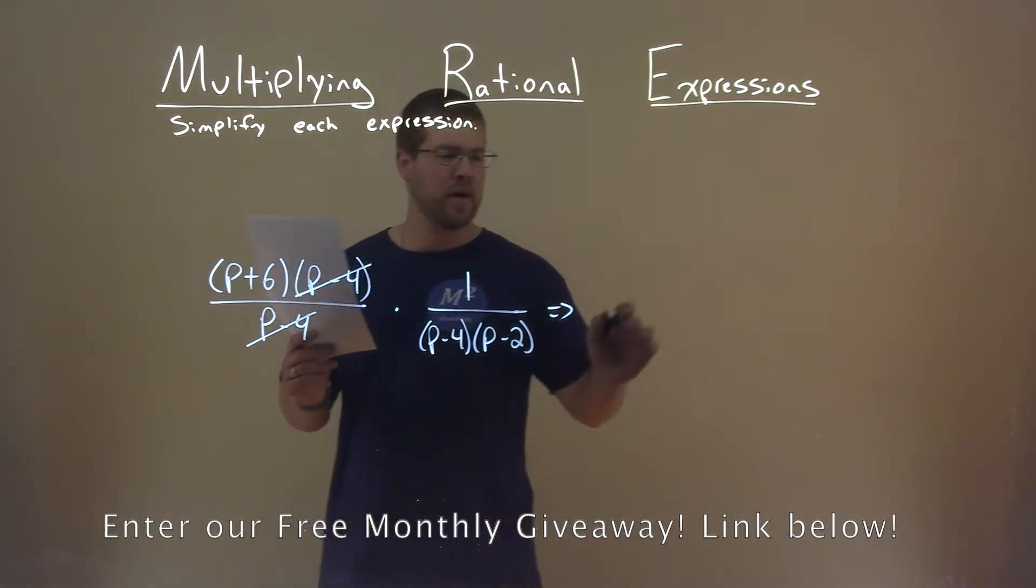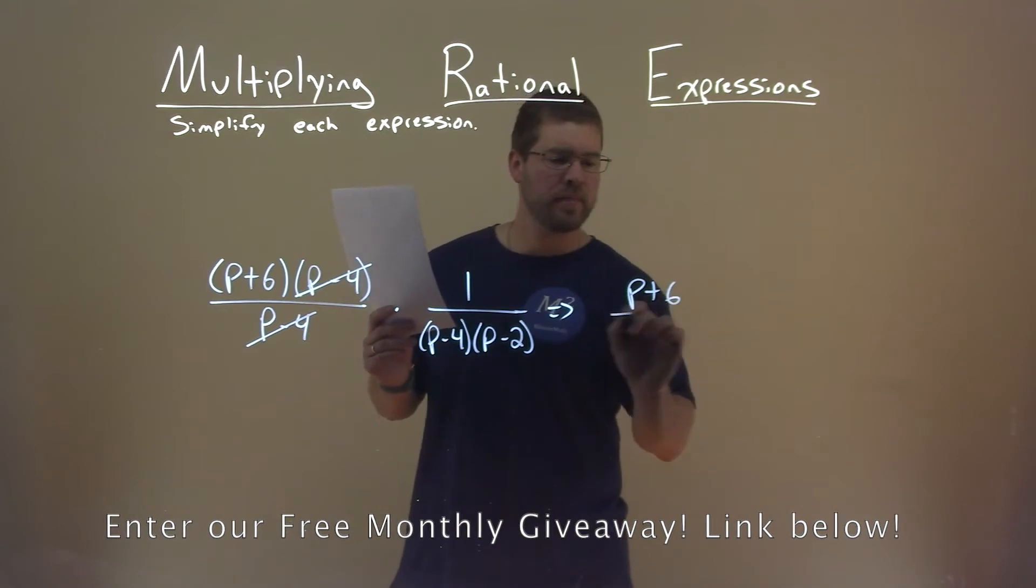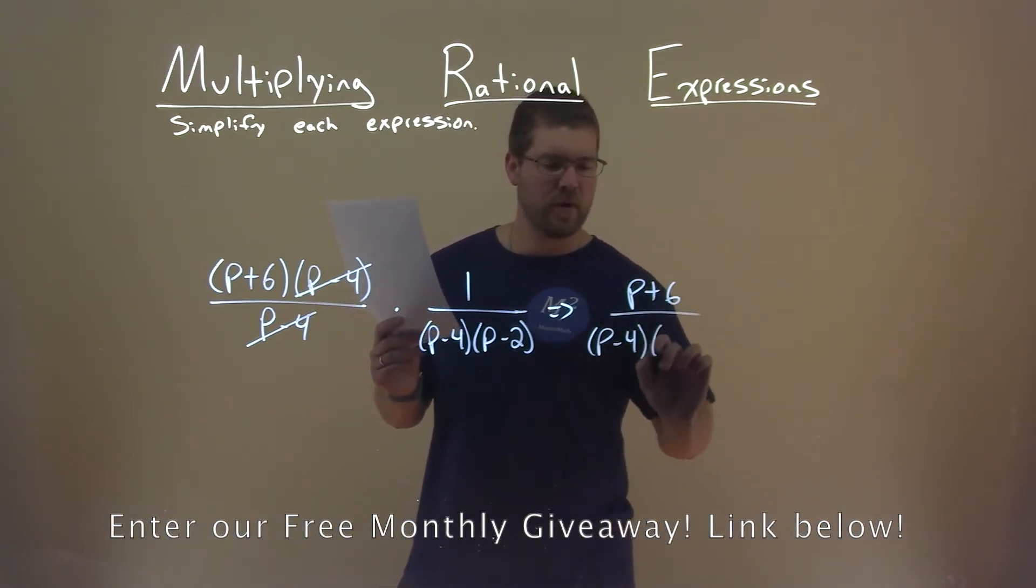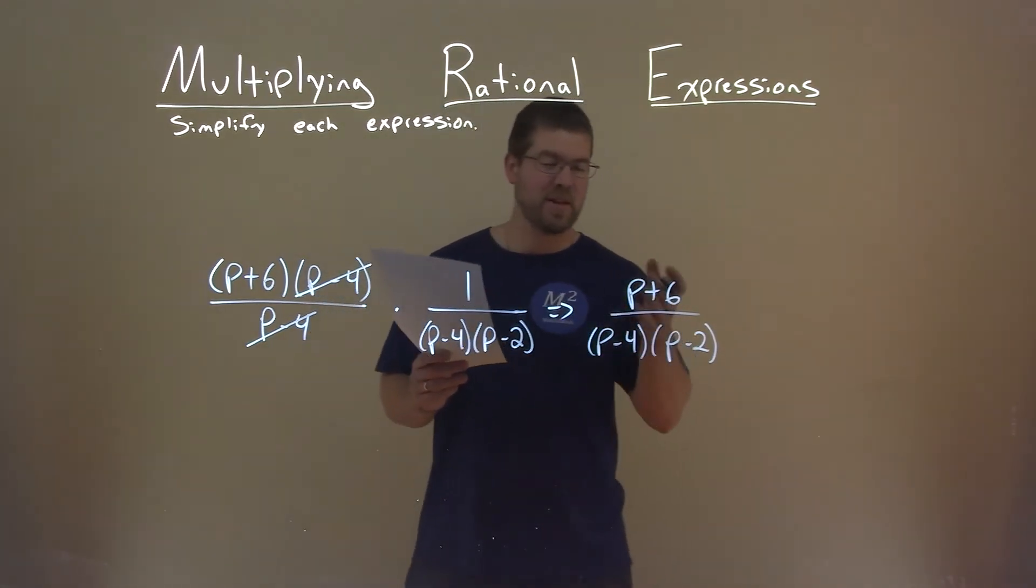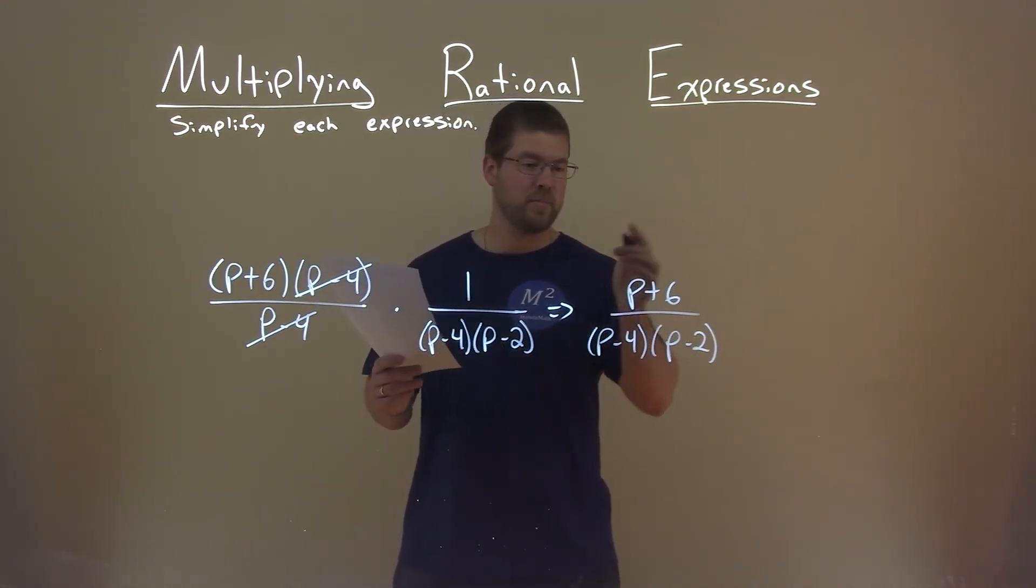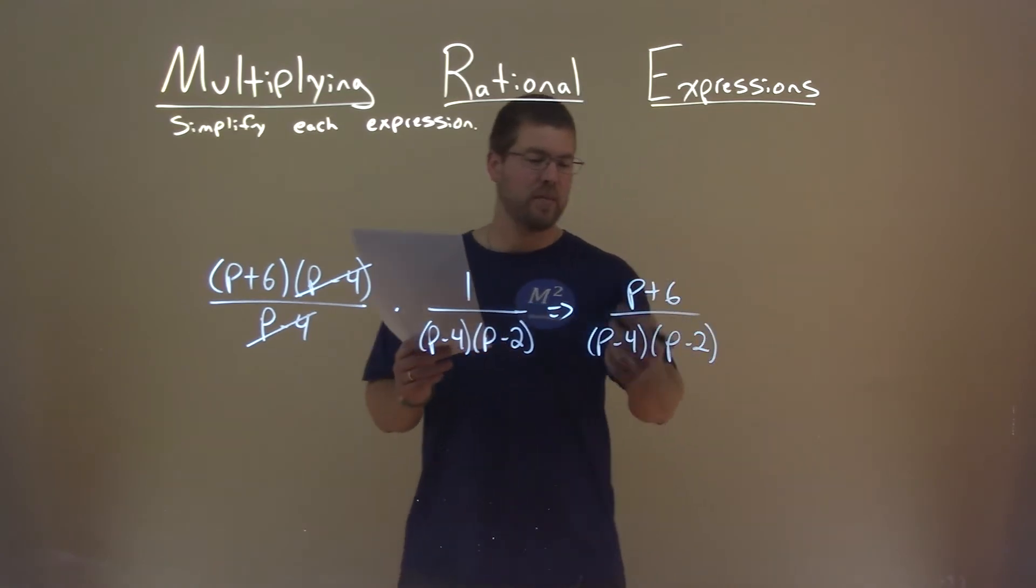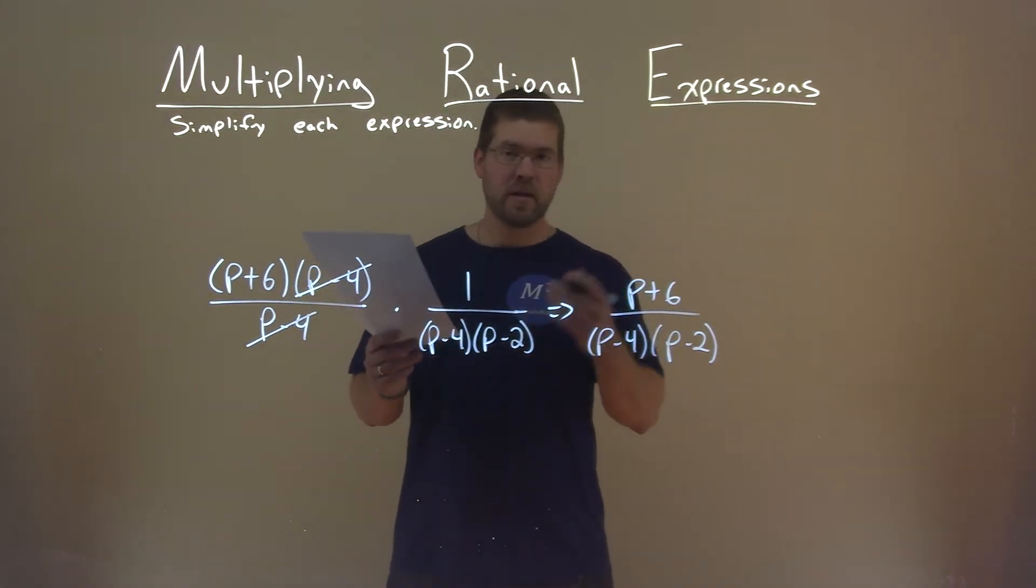So bring that over, I have a p plus 6 in the numerator and the denominator is that p minus 4 times p minus 2, and we're in simplest form here and there's nothing else we'd like to simplify. So p plus 6 divided by p minus 4 times p minus 2 is our final answer.